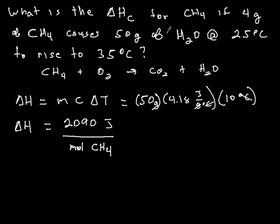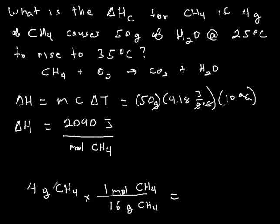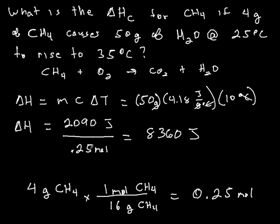And we need to convert that to moles. And so 1 mole of methane has a molar mass of 16 grams. So 4 divided by 16 gives you 0.25 moles. That number goes here, and that will give you 8360 joules. Now, since we divided by the moles, this becomes ΔH of combustion.